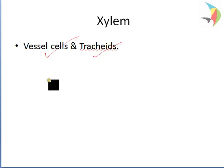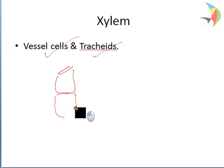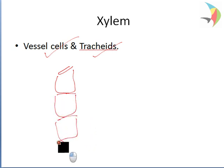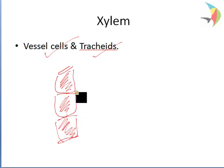Vessel cells are cylindrical cells arranged longitudinally with open ends. These vessel cells help in the movement of water from the root to the upper part of the plant.